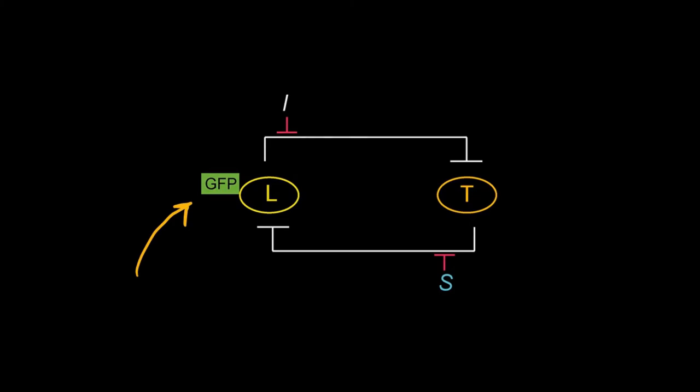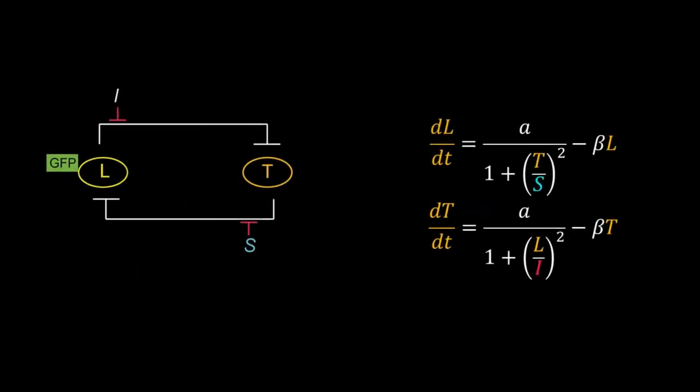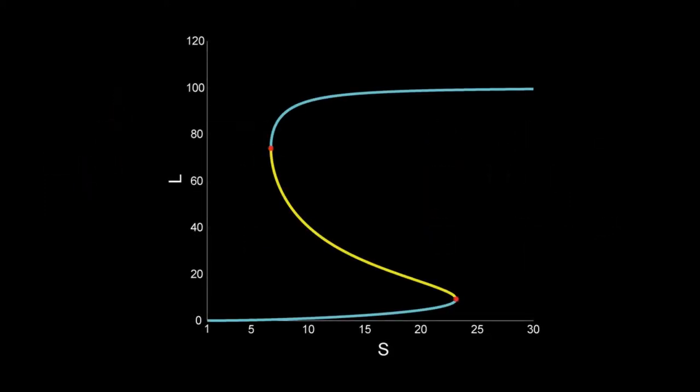Here is our system of ODEs for this system. We will perform bifurcation analysis with respect to S, the inhibitor of T. So S is the control parameter. Here I have shown the bifurcation diagram for L. The blue lines are for stable steady states and the yellow one is for unstable one. This has two saddle node bifurcation points S1 and S2. Between S1 and S2 the system is bistable. For one stable steady state L has high expression and in the other the expression of L is very low.